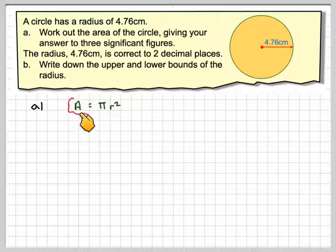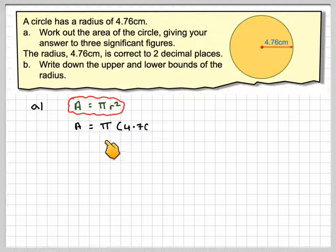Let's do that first. So the area of a circle is πr², you have to remember that. So it's going to be equal to π times 4.76 squared. And if we work that out on our calculator,